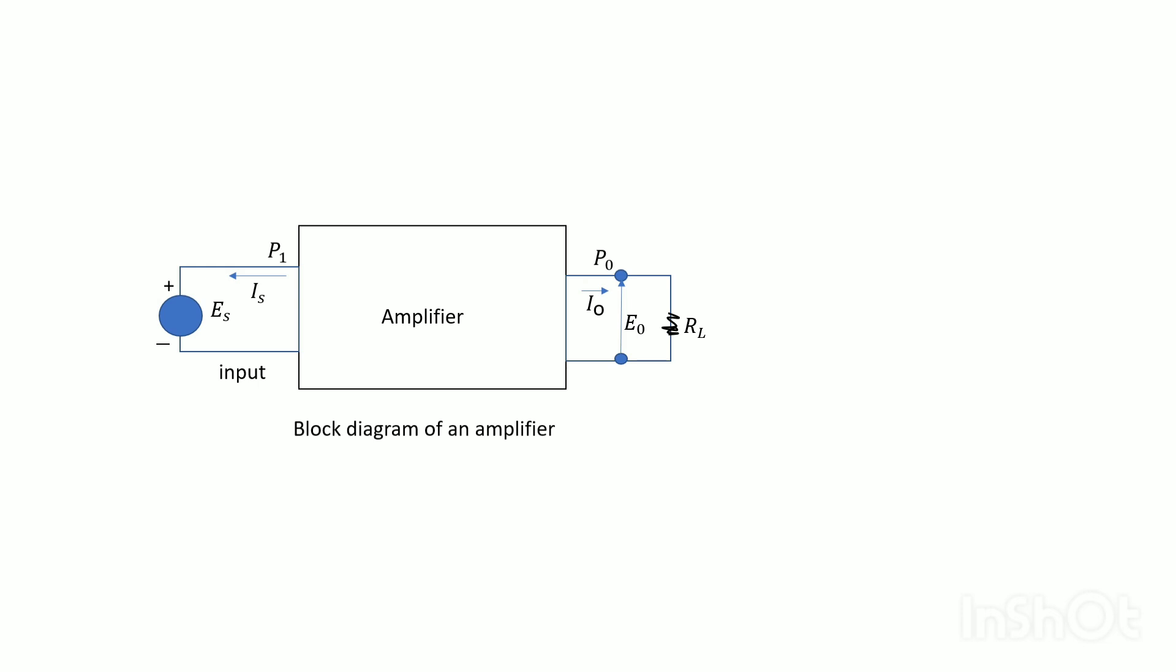Input signal current is Is. Across the output terminal is load resistor RL. Resistance RL may represent, for example, the resistance of a loudspeaker coil, a motor winding, or the input to a connected amplifier stage. Voltage E0 is the output load voltage and current I0 is the output current. An amplifier increases the magnitude or amplifies an electric signal. The signal may be derived from, for example, a TV antenna, a phonograph cartridge, or strain gauge.